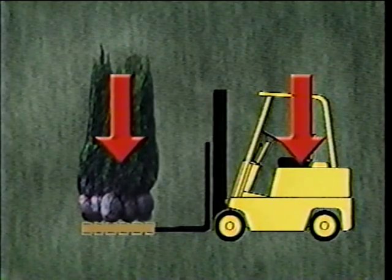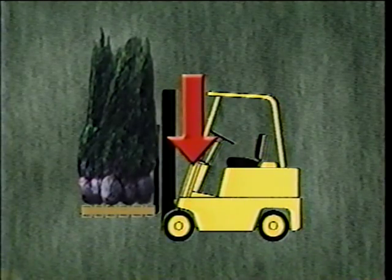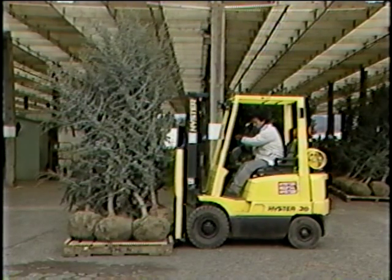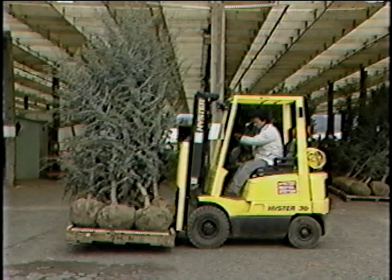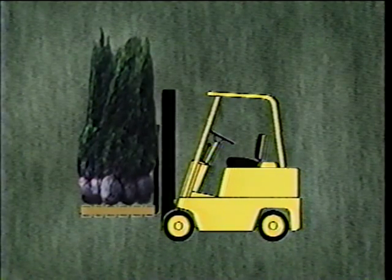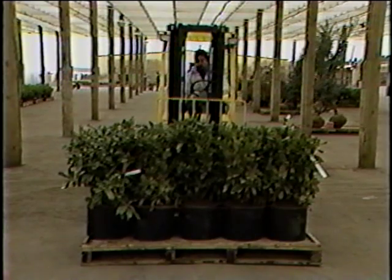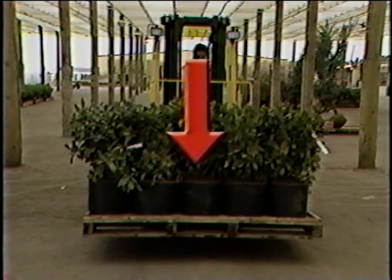Notice where the center of gravity of the load and the center of gravity of the forklift are, and watch what happens to the combined center of gravity when the load is lifted. When you pick up a load, the combined center of gravity is determined by the weight and arrangement of the load. If the load is above the rated capacity or placed incorrectly on the forks, the center of gravity will be off and cause the forklift to be very unstable. It is very important when carrying a load that you have the center of gravity between the front wheels — if it is too far off to one side, the whole forklift could tip.